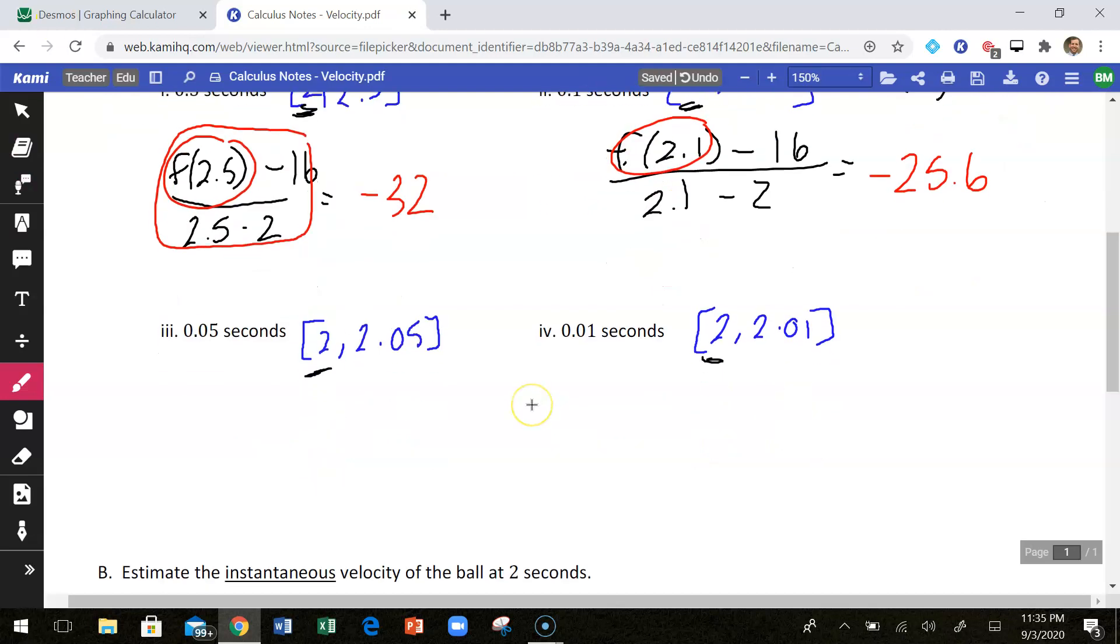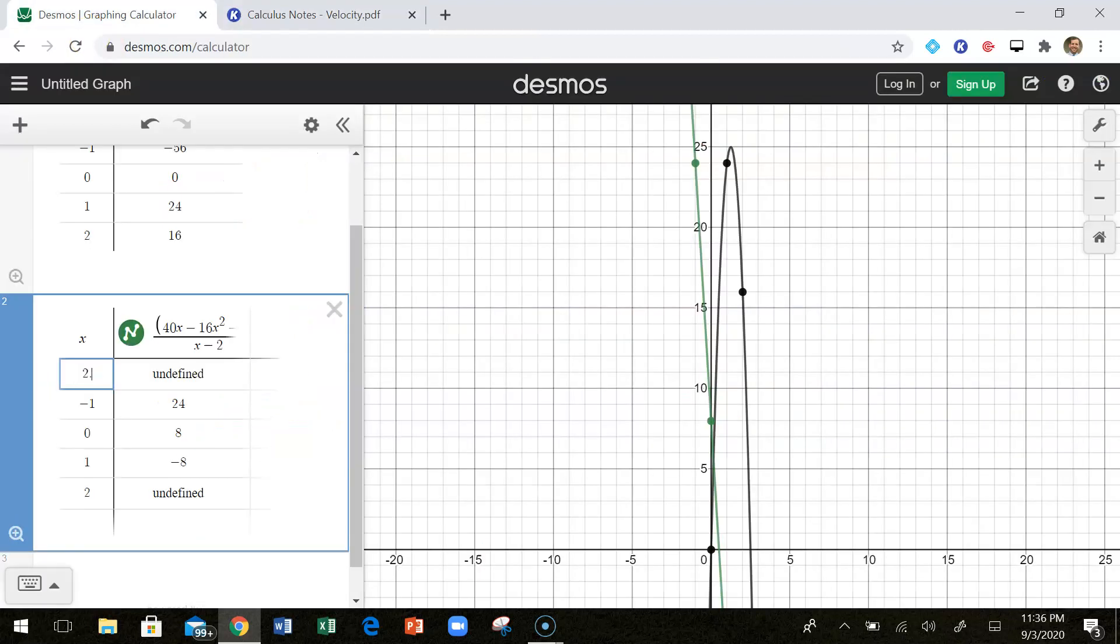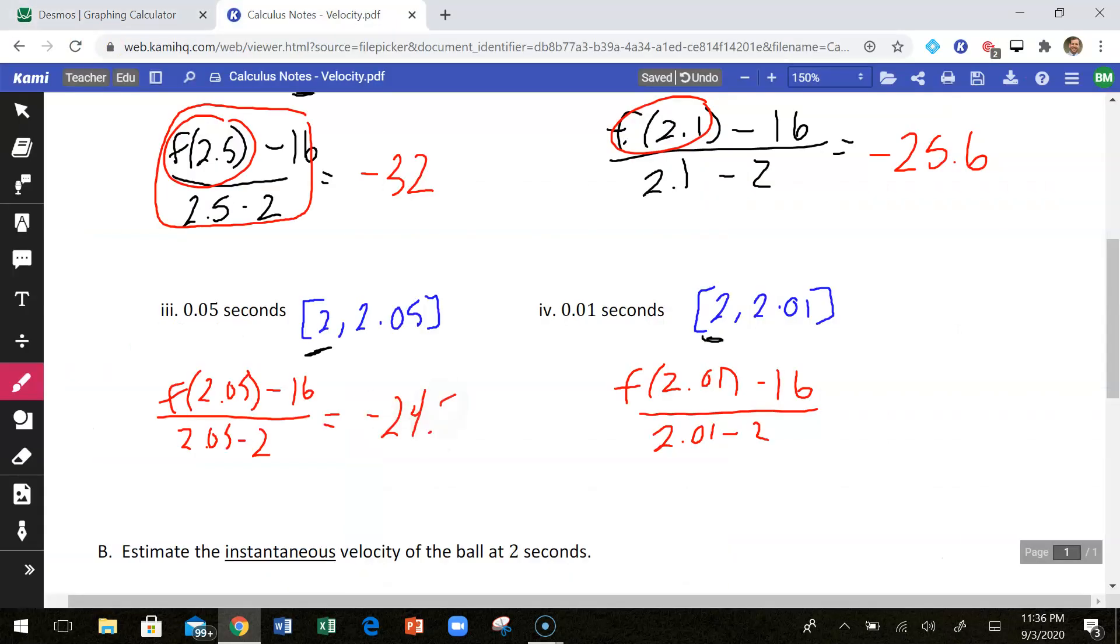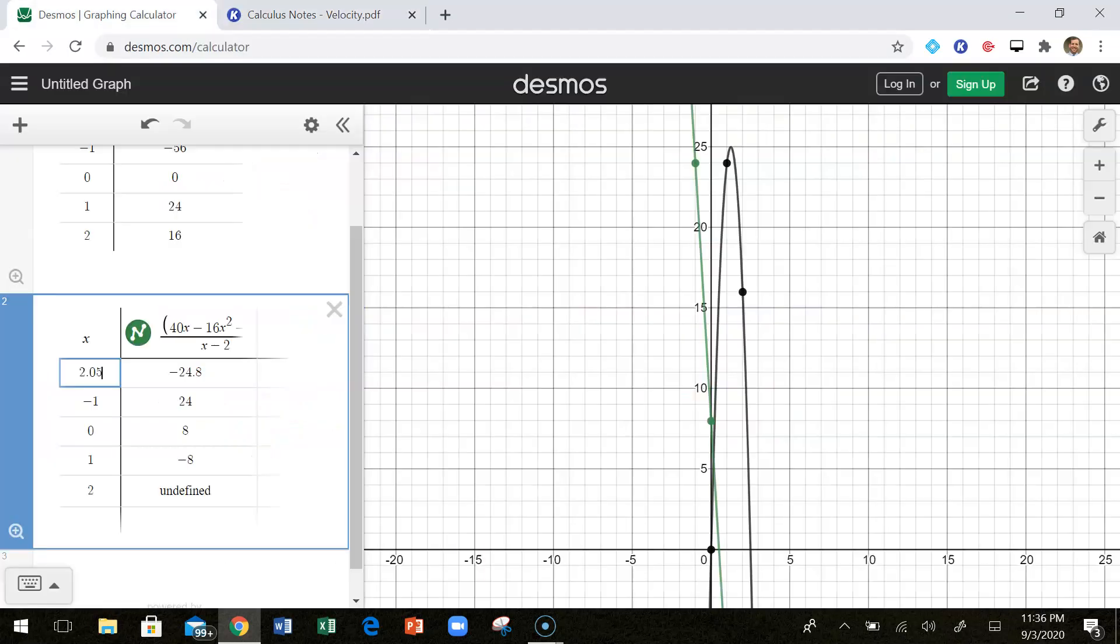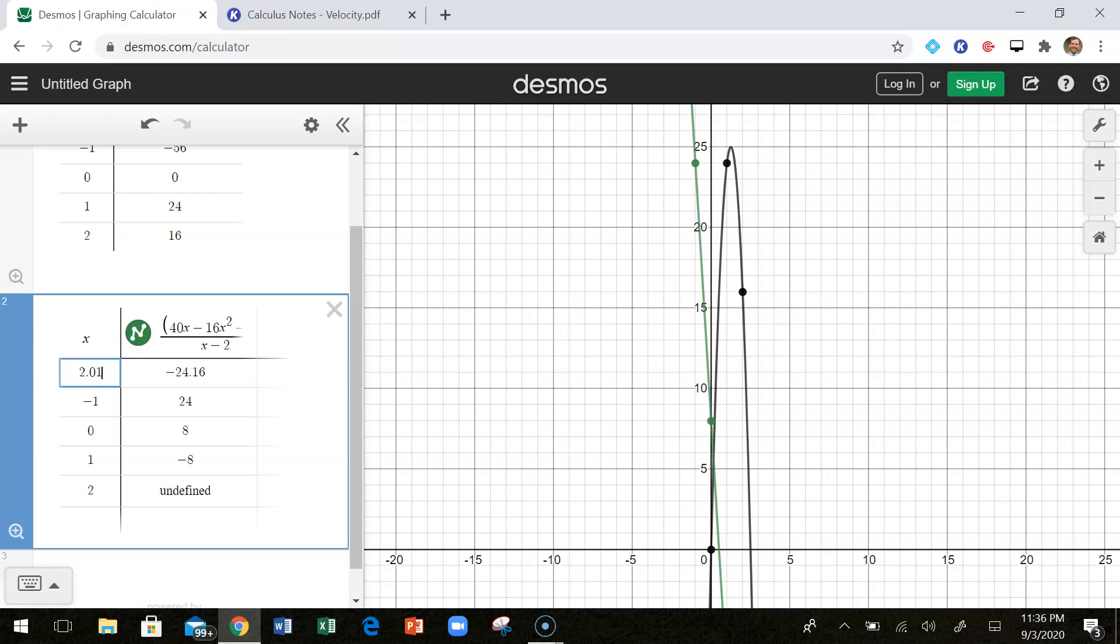Well, 2.05. So this is f of 2.05 minus 16 over 2.05 minus 2. And this would be f of 2.01 minus 16 over 2.01 minus 2. So I'm just going to change my 2.1 to 2.05. So I get negative 24.8. And then 2.01, I get negative 24.16.